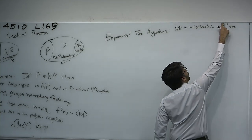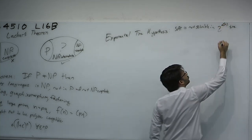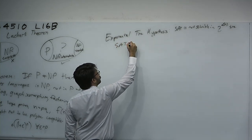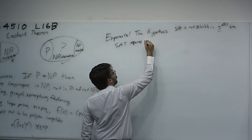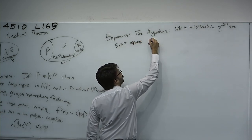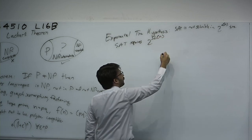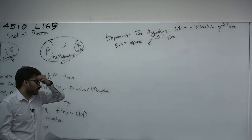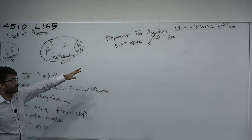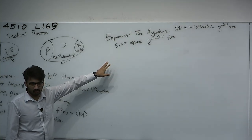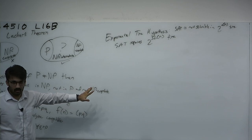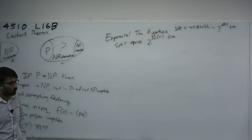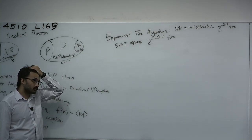Another way you can think of that is: SAT requires at least exponential time. You can't solve SAT faster than exponential time — not even quasi-polynomial time, not even a little bit faster asymptotically. SAT requires only exponential time. That's what the Exponential Time Hypothesis is.